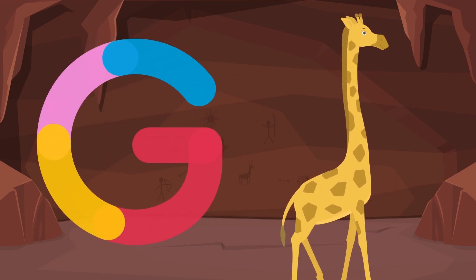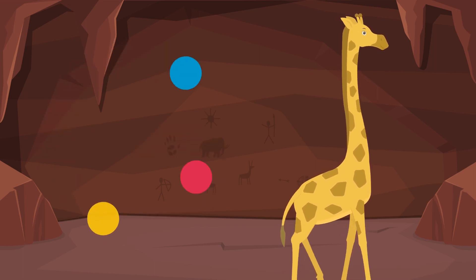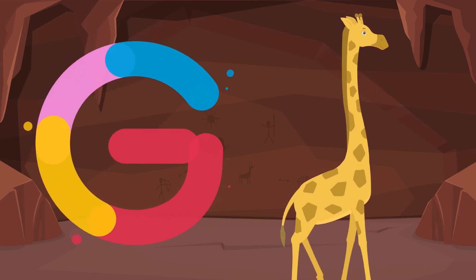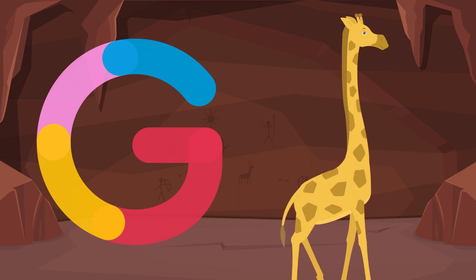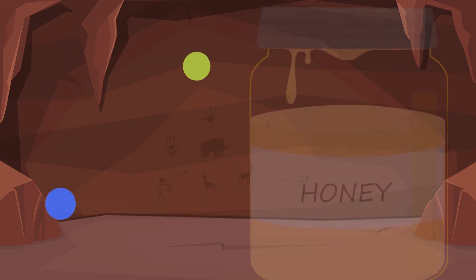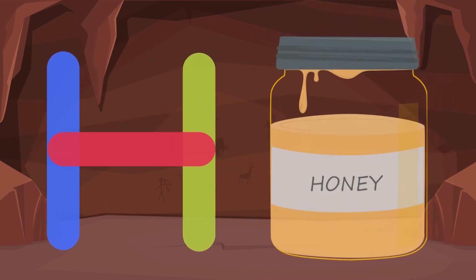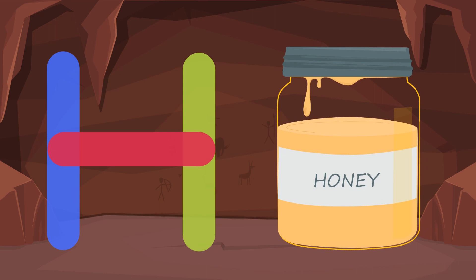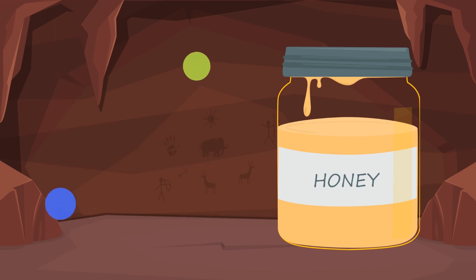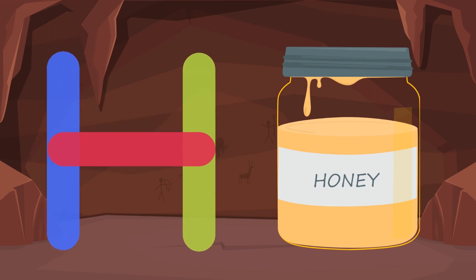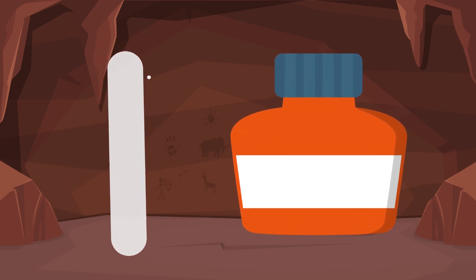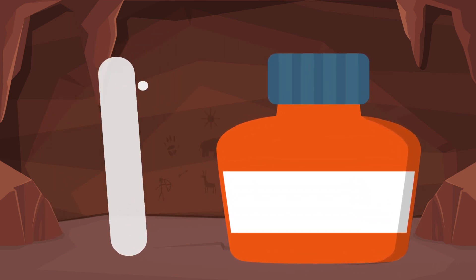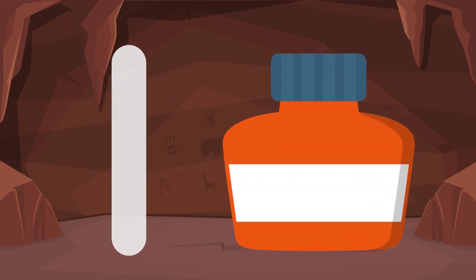G is for giraffe. H is for honey. I is for ink.